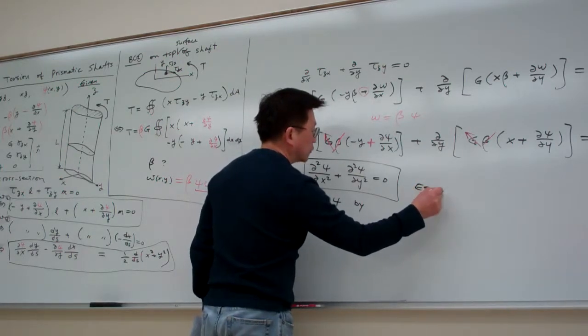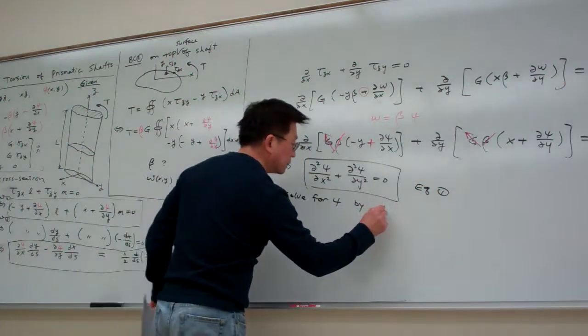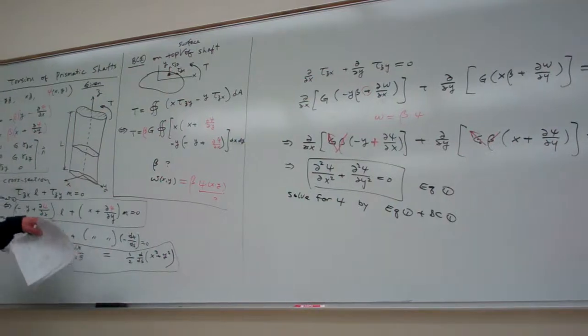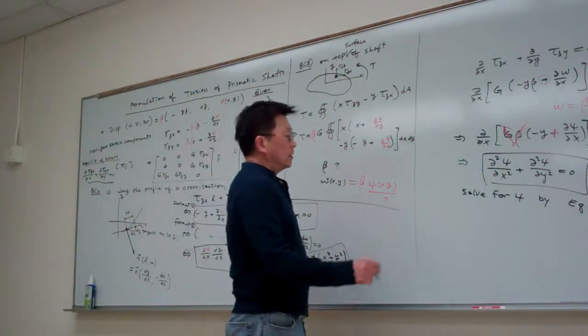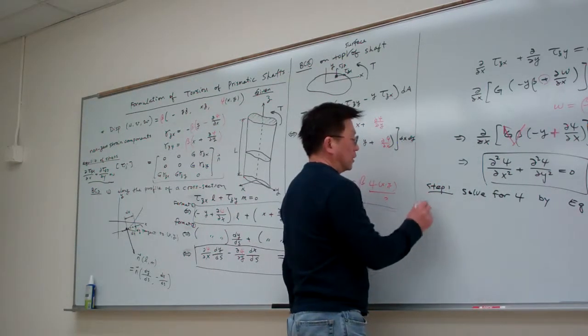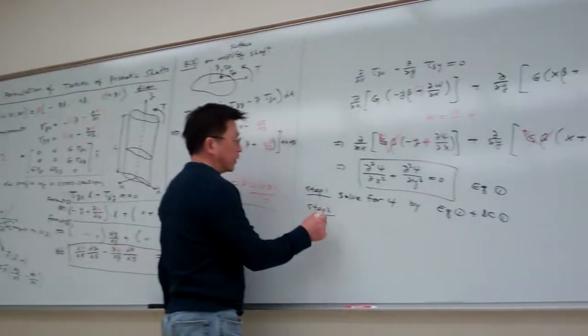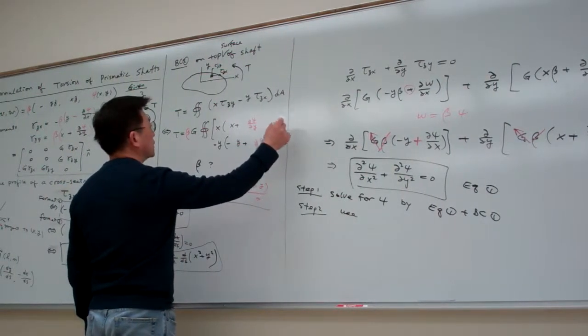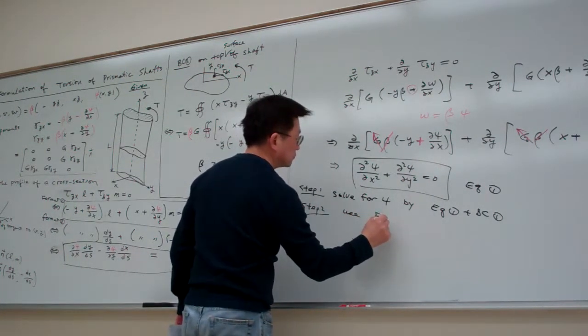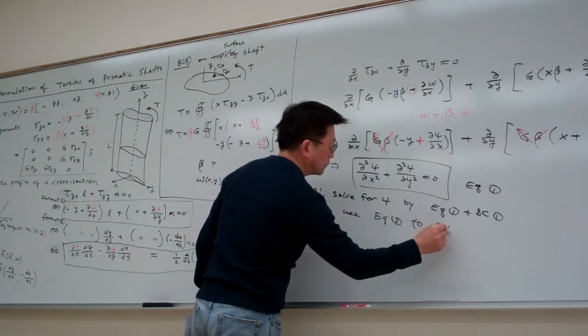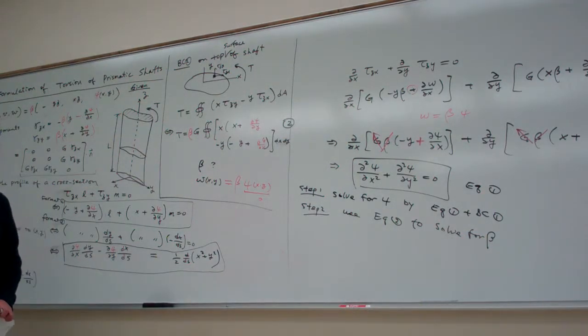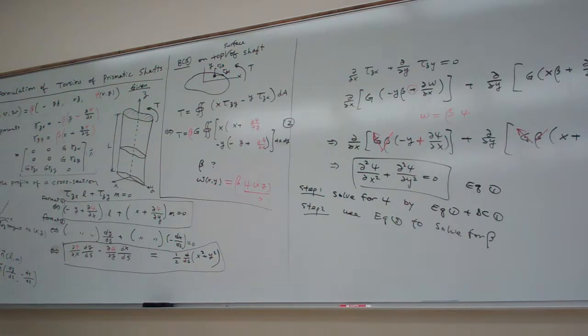Let me call it equation one and boundary condition one. Something like this. You take this one, or this one, either one. This is step one. And then step two is this. Once we solve for psi, then use the equation two to solve for beta. So that is the thinking process.